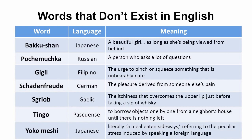For example, there is a Japanese word, 'bakushan,' which refers to a beautiful girl as long as she's being viewed from behind. There's a Russian term, 'pochemushka,' that refers to a person who asks a lot of questions. There's a Filipino term, 'gigil,' which refers to the urge to pinch or squeeze something that is unbearably cute. You might be familiar with 'schadenfreude' — that's a German term referring to the pleasure derived from somebody else's pain. And there's a Gaelic term, 'sgriob,' that refers to the itchiness that overcomes the upper lip just before you take a sip of whiskey.